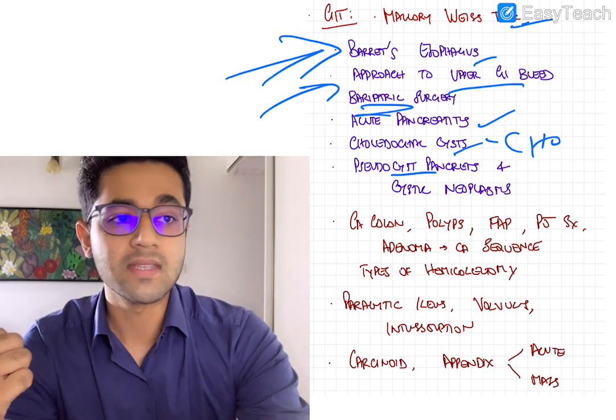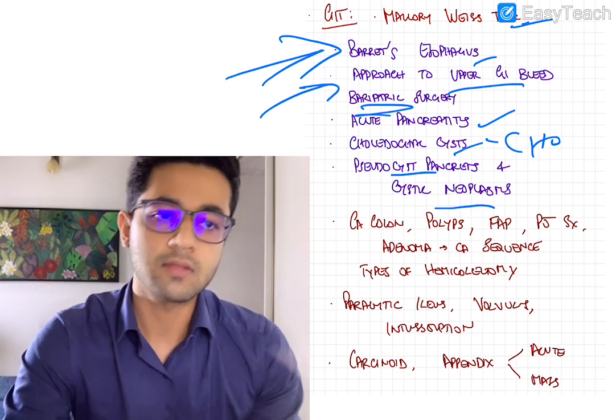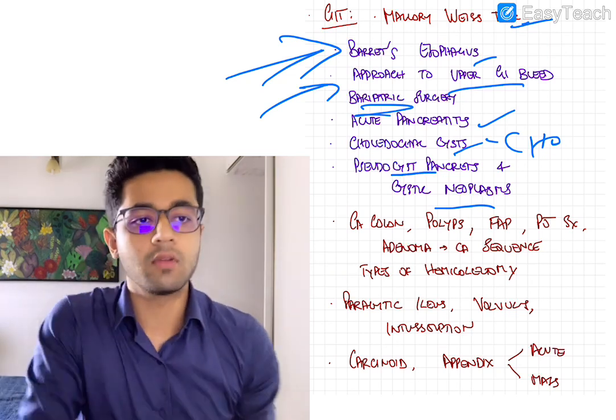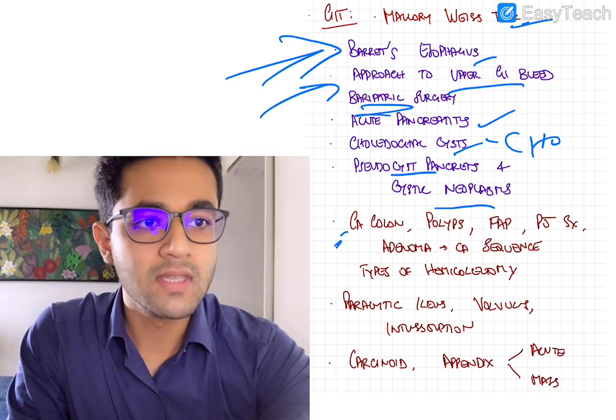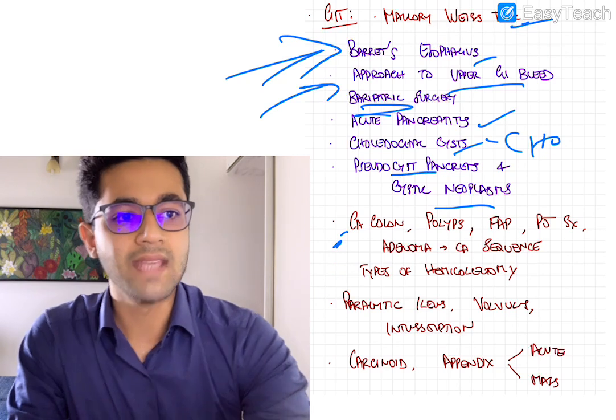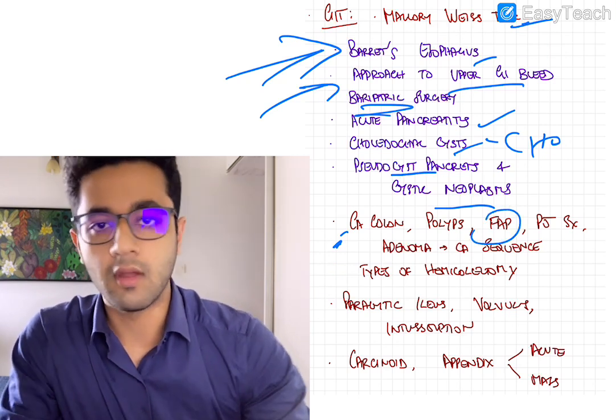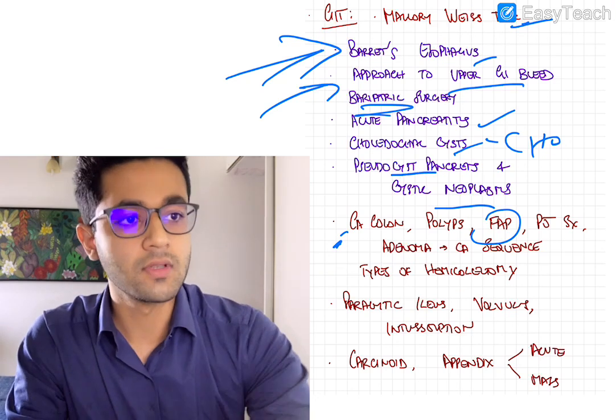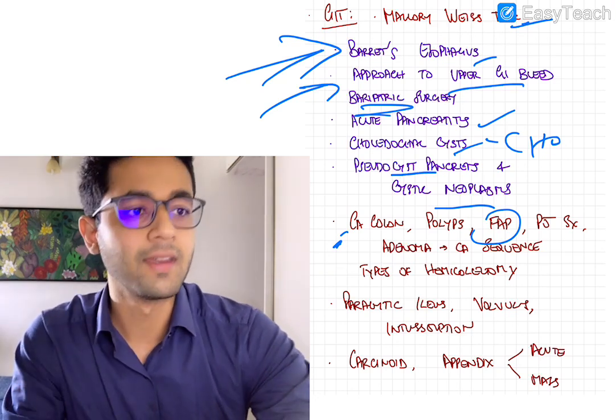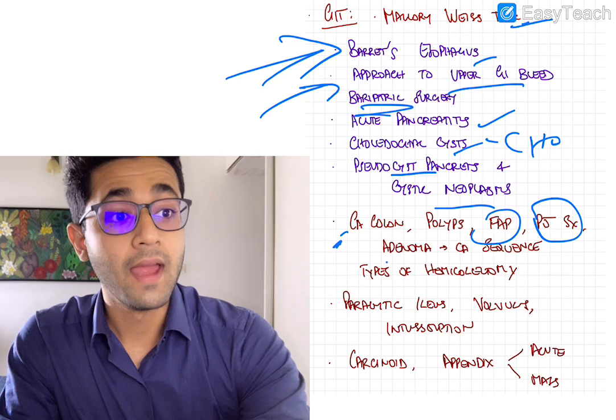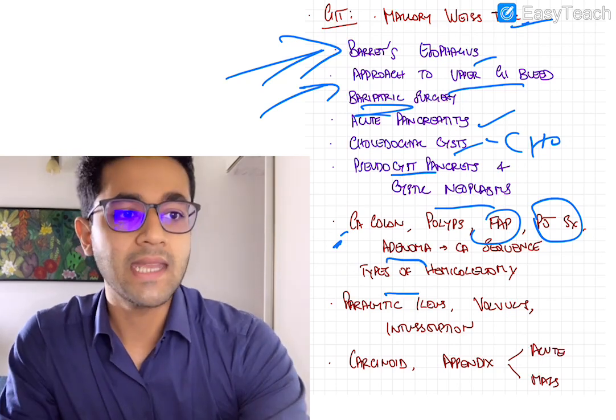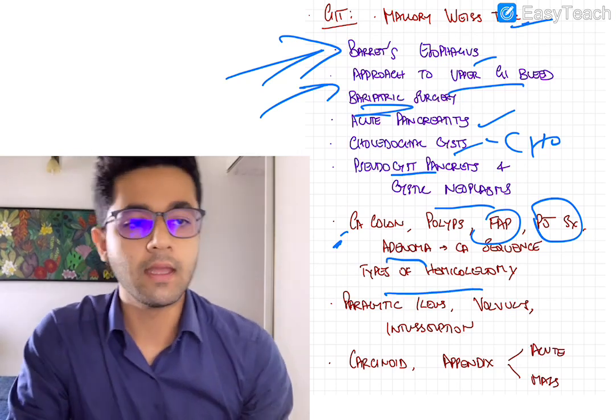Pseudocyst of pancreas and cystic neoplasms of pancreas, again, very important. So everything in purple is super important. Everything in brown is moderately important. So CA colon, polyps, different types of polyps, knowing about FAP, your familial adenomatous polyposis. And you've got Peutz-Jeghers syndrome, adenoma carcinoma sequence, and types of hemicolectomy, all mildly and moderately important, rather.